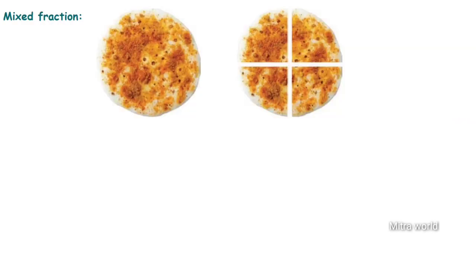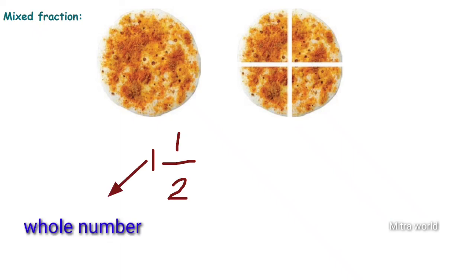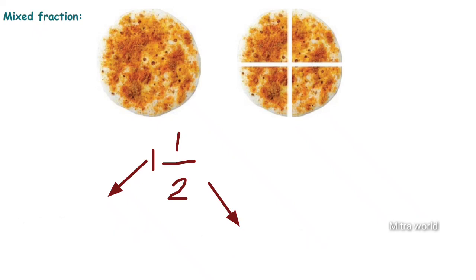Next is the mixed fraction. Imagine we have one full piece of dough and half a piece — we call this 'one and a half.' This is a mixed fraction: it contains a whole number part and a proper fraction part, like 1 and one-half. A fraction which contains a whole number and a proper fraction is called a mixed fraction. The three types of fractions are: proper fraction, improper fraction, and mixed fraction.